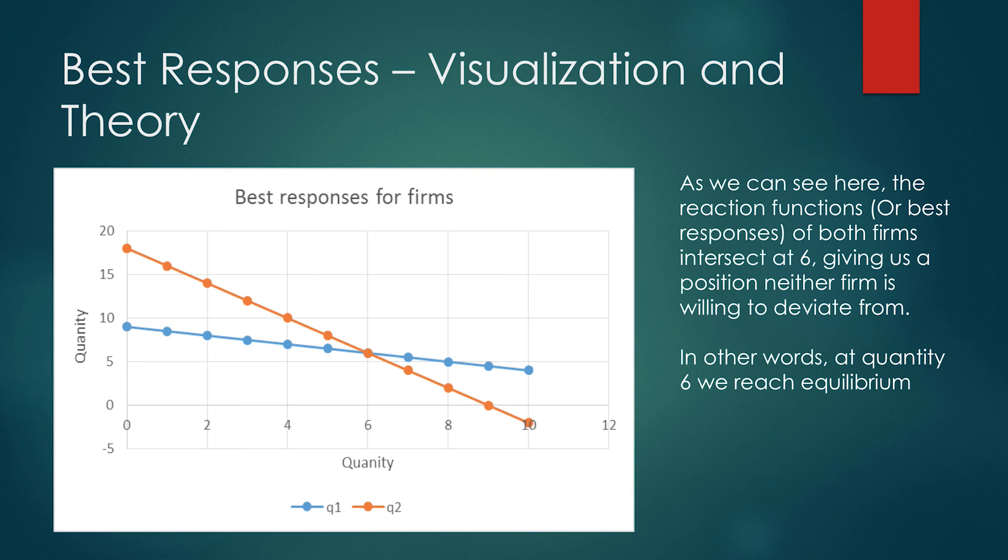This is a visualization of the best responses. As we can see here, the reaction functions of both firms intersect at 6, giving us a position neither firm is willing to deviate from. In other words, at quantity 6, we reach equilibrium.